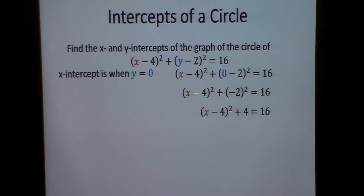And if I'm solving an equation, I undo things, so it's minus 4 from each side. Now I have (x - 4)² equals 12. But I need to get the x by itself to find the x-intercept.